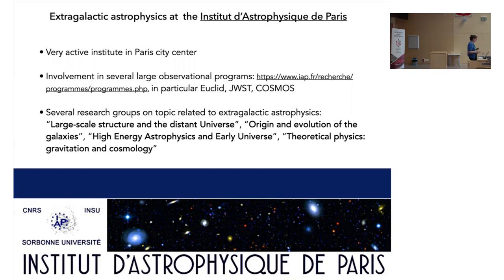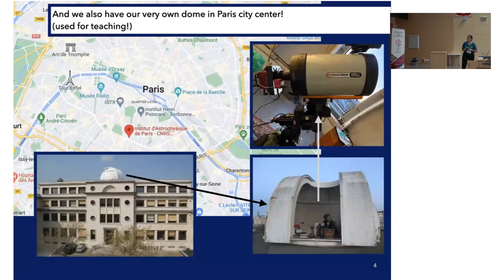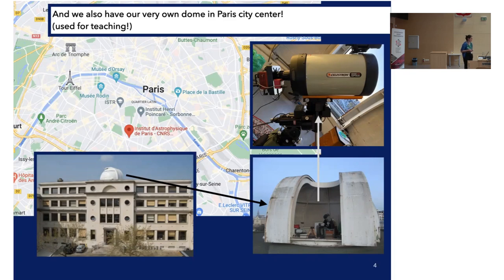At the Institut d'Astrophysique de Paris we also have our very own observatory in the city centre — a dome on top of the IAP with a working telescope used for teaching. Obviously, we are very light-polluted by the city, so we cannot observe much, but for teaching purposes we can still observe nebulae in narrow-band imaging.